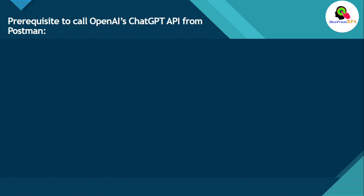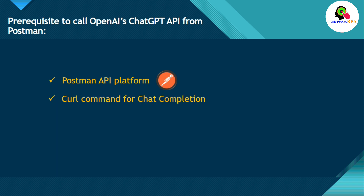Let me show you the prerequisites to call OpenAI's ChatGPT API from Postman. First, we should have a Postman API platform logged in. Second, the curl command for the chat completion for which you are going to make a request. Third, we need an OpenAI API key. I am going to help you with each of these one by one.